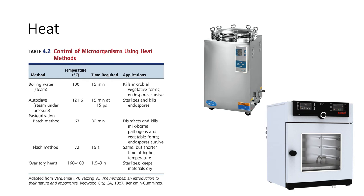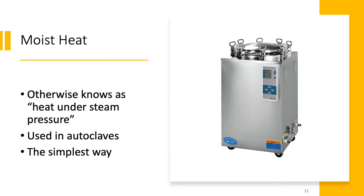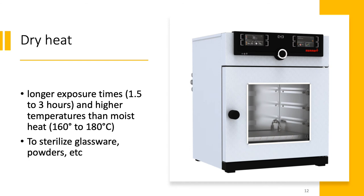This allows proper penetration of steam. The most common method of sterilization is using moist heat, otherwise known as steam under pressure, which is the principle used in autoclaves. This is also the simplest way to disinfect your objects. Dry heat requires longer exposure times of 1 to 3 hours, and is used to sterilize glassware and materials that cannot come in contact with water, such as powder.